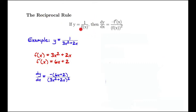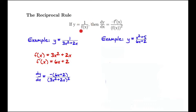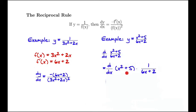Let's look at a more complicated example where we combine the reciprocal rule with the product rule. In this case, we still have a reciprocal — we have a denominator of 6x plus 2 — but we also have a numerator of x squared plus 5. So this rule doesn't apply exactly. To use this rule, you have to have a 1 in the numerator, and we don't. But if we want to take the derivative of (x squared plus 5) over (6x plus 2), we can rewrite it as a product.